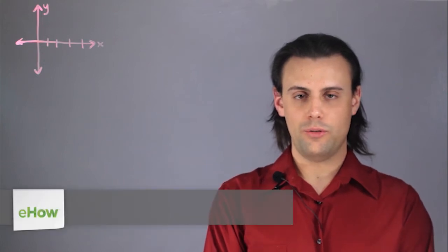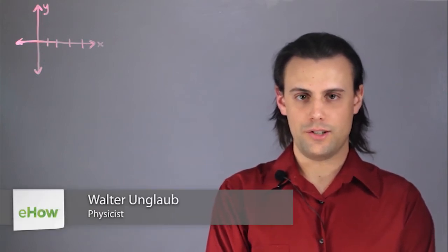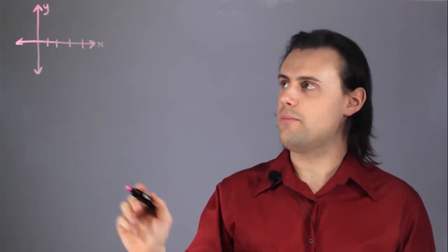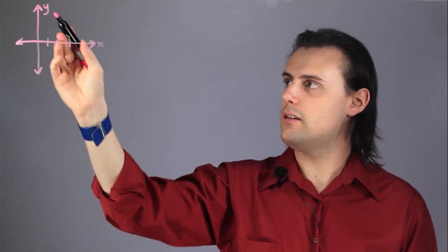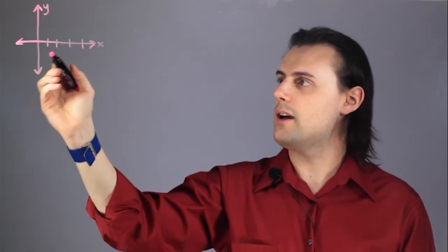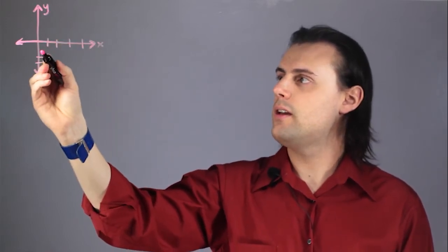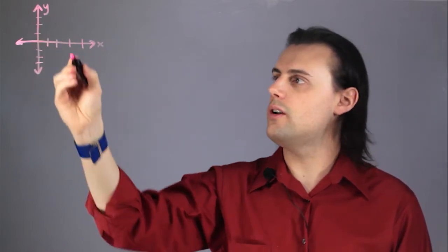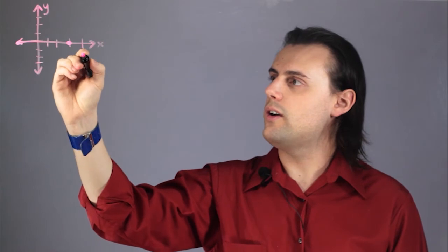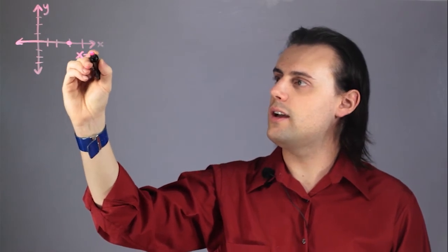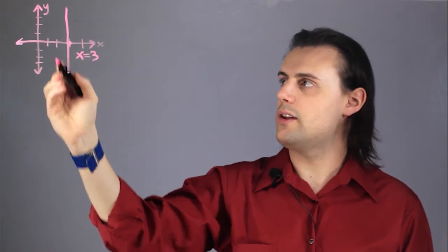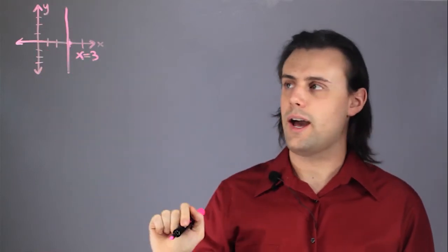Hello, my name is Walter Unglaub and this is slope equation for vertical curves. Here I'm considering a Cartesian coordinate system where I have a plane with y and x as my axis variables. I'm considering a vertical curve — for example, if I consider the vertical curve at x equals 3, then I have just a straight line that is parallel to the y axis.